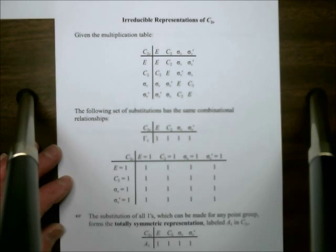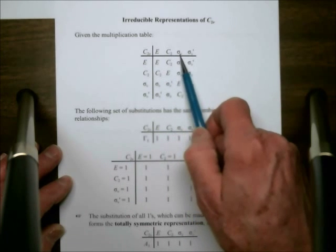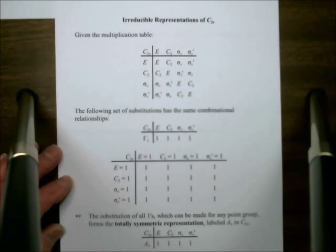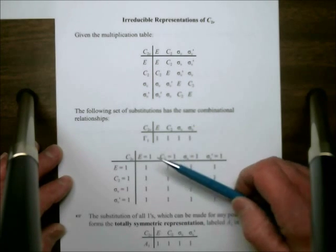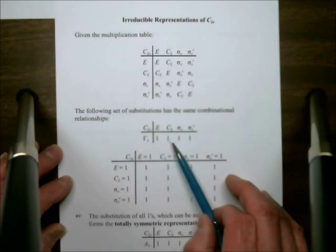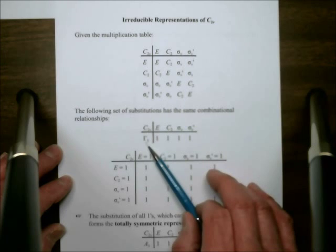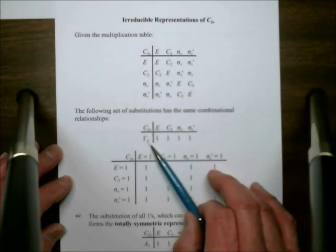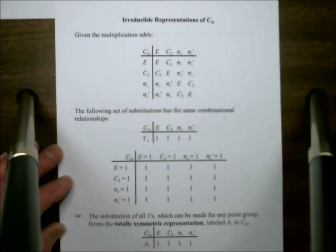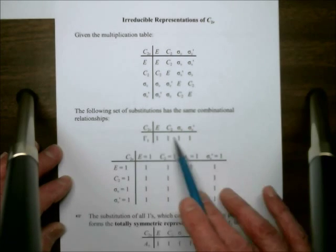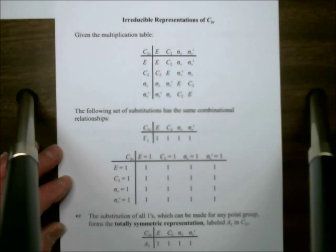What we want to do is see if we can make a set of substitutions for the operations E, C2, sigma v, and sigma v prime, such that those substitutions obey the multiplication results. One of the most simple and seemingly trivial ones is 1, 1, 1, 1, and I'm giving it the designation gamma sub 1. Gamma is used in group theory to indicate a representation.